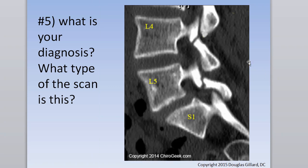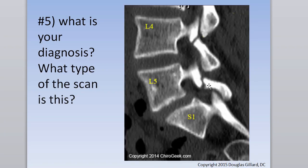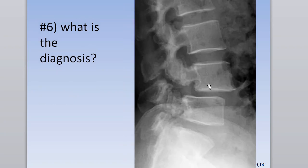Spondylolysis: we have breaks through the pars interarticularis — there may be a tiny slip. According to the Wilts system this would be an isthmic spondylolisthesis, but preferably say 'bilateral spondylolysis at L4-L5.' Make sure you say that or you'll lose points.